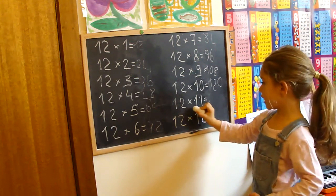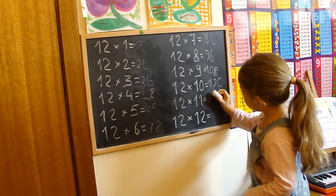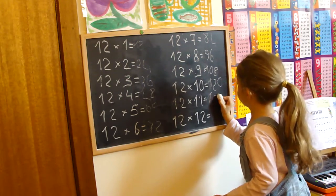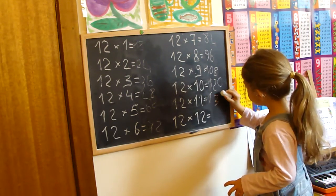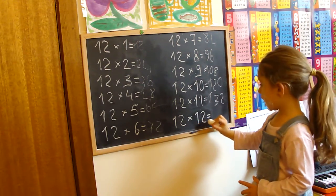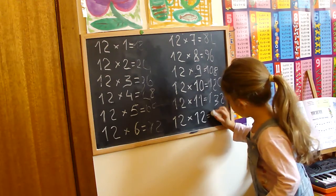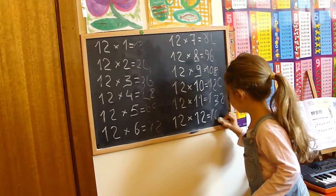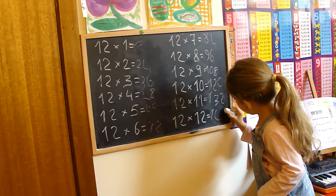Twelve times ten, it's hundred-twenty. Hundred-thirty-two. Twelve times twelve, hundred-forty-four.